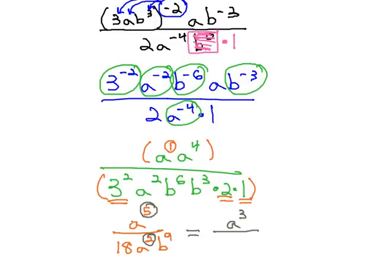This makes sense, because we have 5 a's in the numerator and 2 in the denominator. When we divide out, the leftovers should be in the numerator. We still have the 18b^9 in the denominator, and this becomes our final answer.